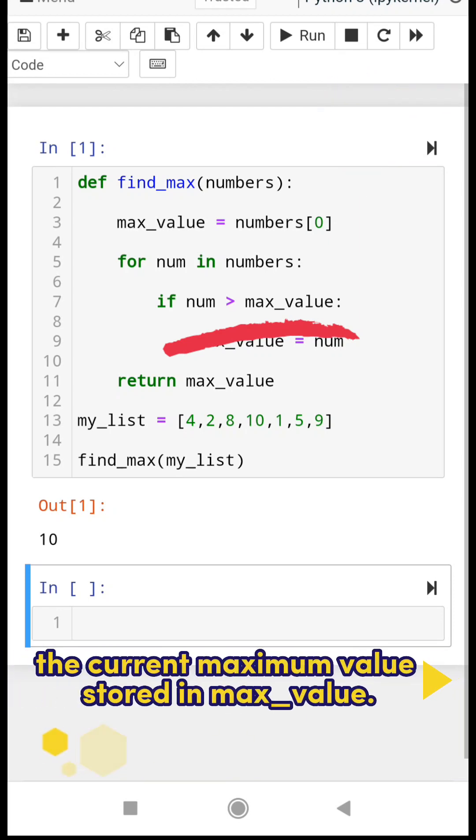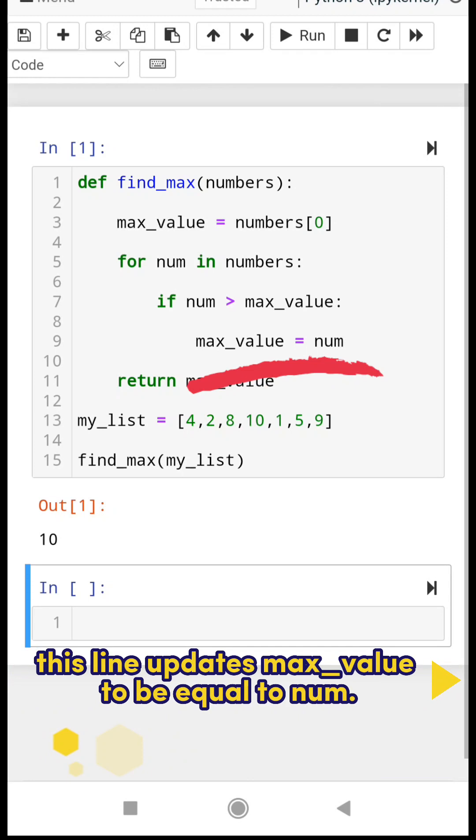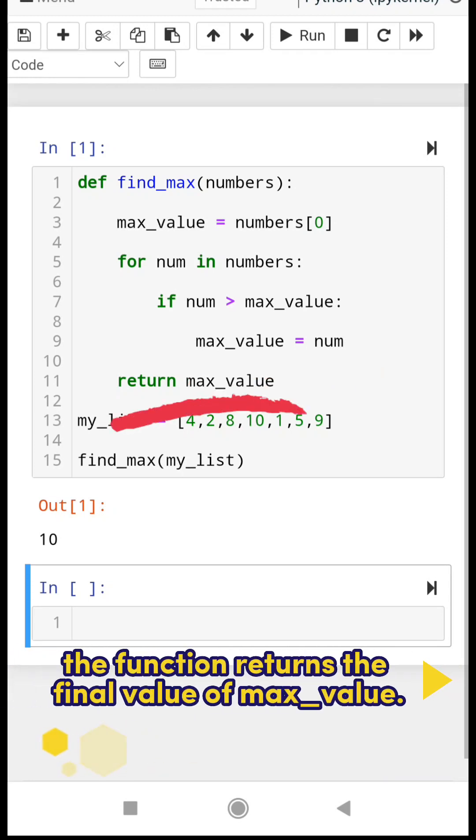If num is greater than max_value, this line updates max_value to be equal to num. Once the loop has finished, the function returns the final value of max_value.